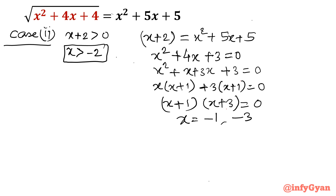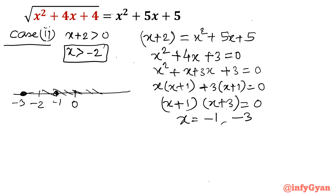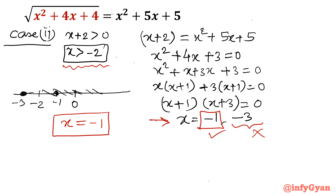There are two solutions from the factorization. Drawing the number line: we have -3 and -1 marked, with -2 also marked. The condition for Case 2 is x > -2. So -1 satisfies this condition, but -3 does not — it is outside the domain x > -2. Therefore, from Case 2, x = -1 is the solution.